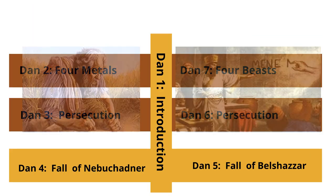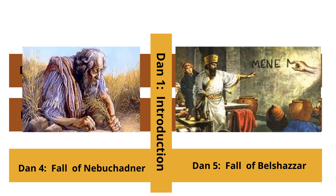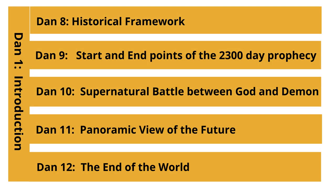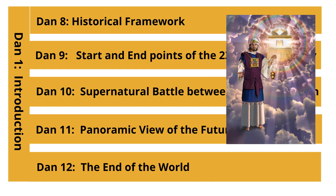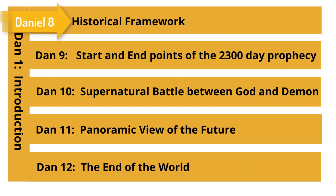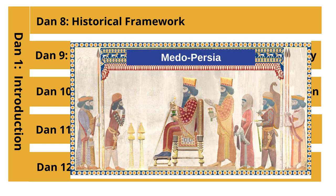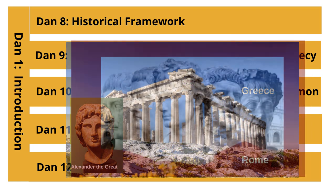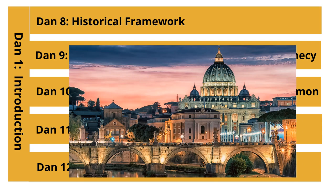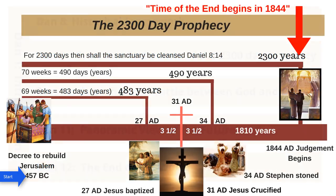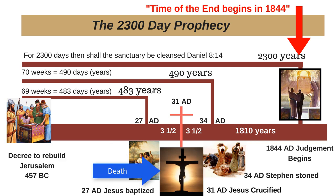Daniel chapters 4 and 5 deal with the fall of arrogant kings — the fall of King Nebuchadnezzar and King Belshazzar. Daniel chapters 8 through 12 are interconnected and describe Christ's work in the heavenly sanctuary. Daniel 8 lays out the historical framework, moving us through the stream of time beginning with the kingdom of Medo-Persia, transitioning to Greece, then to pagan Rome, and finally to Papal Rome, which is still reigning today. Daniel chapter 9 identifies the starting point of the 2300-day prophecy. It foretells the anointing of the Messiah and his death on the cross, and pinpoints the exact time when these events would occur.